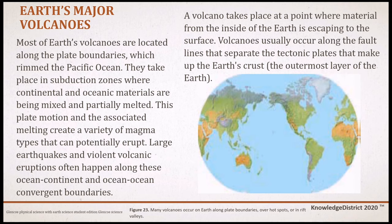Most of Earth's volcanoes are located along the plate boundaries, particularly around the Pacific Ocean. They take place in subduction zones where continental and oceanic materials are being mixed and partially melted. This plate motion and associated melting create a variety of magma types that can potentially erupt. Large earthquakes and violent volcanic eruptions often happen along ocean-continent and ocean-to-ocean convergent boundaries. A volcano occurs at a point where material from the inside of the Earth escapes to the surface, usually along fault lines separating tectonic plates.